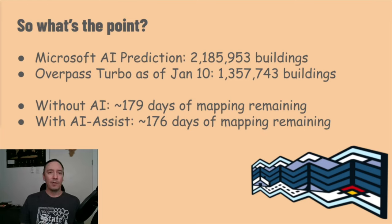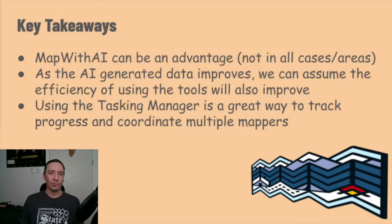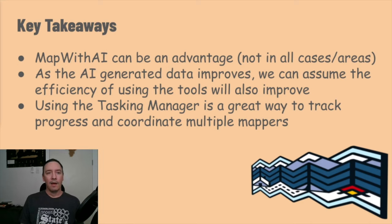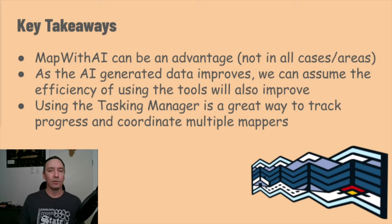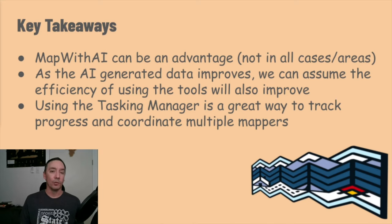So using the Task Manager and Map with AI tools shows promise in streamlining mapping efforts. Of course, further comprehensive studies involving multiple mappers would provide more robust insights. I've also seen and heard that for other areas around the world the data is not nearly as good or complete as Colorado, so while it might be an advantage here, that may not be the case elsewhere. As the data improves, hopefully the usefulness of the tools will also improve globally.